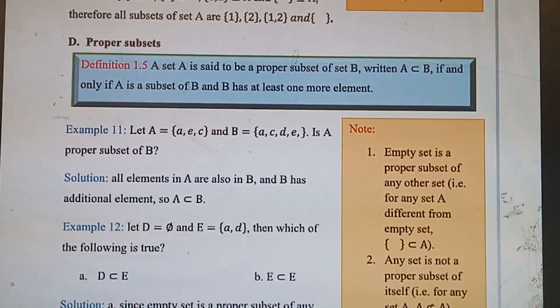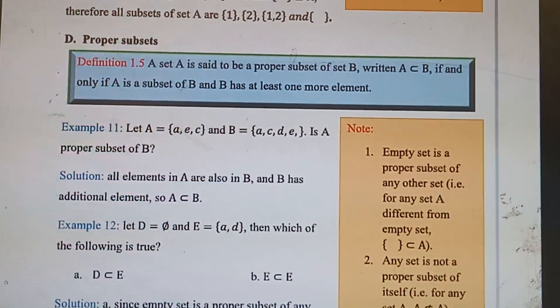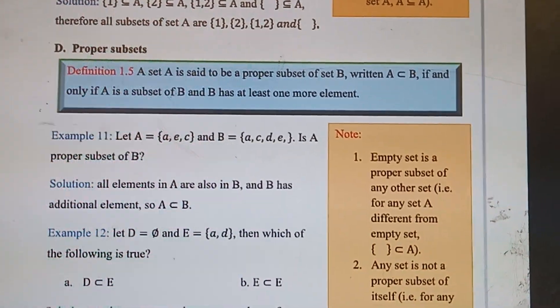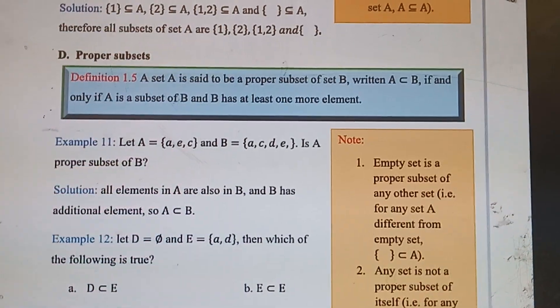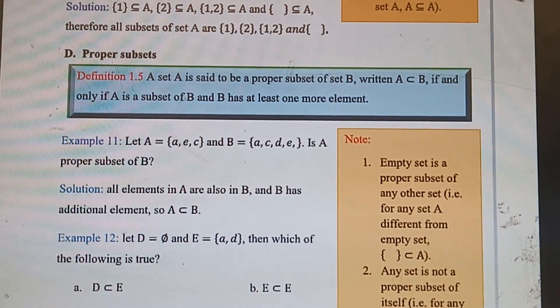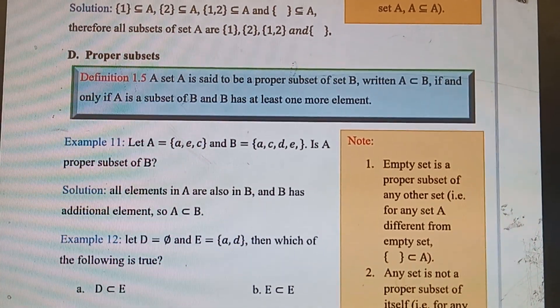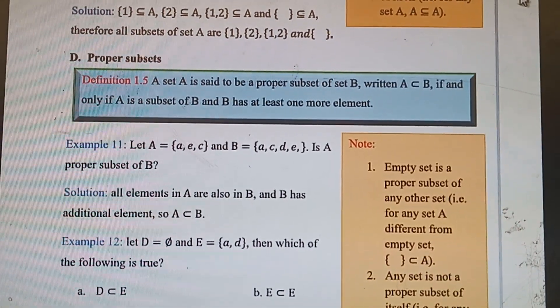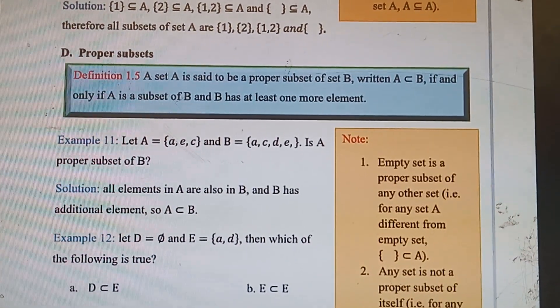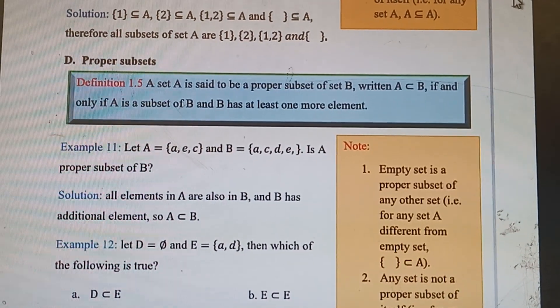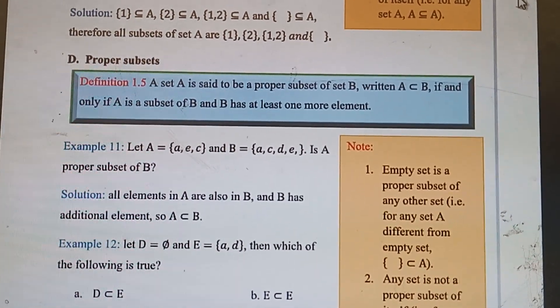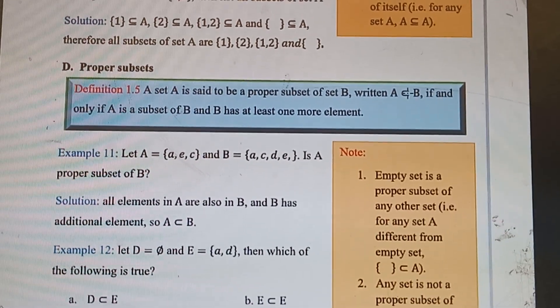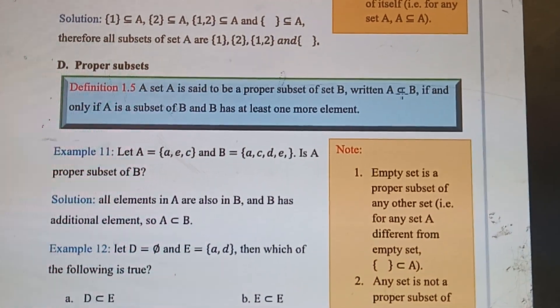Okay students, now we are going to today's lesson. Our lesson today is proper subsets of a set. Definition 1.5: A set A is said to be a proper subset of a set B, written A⊂B.